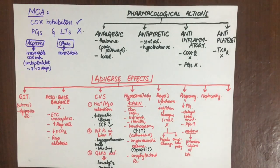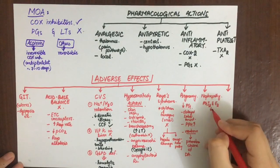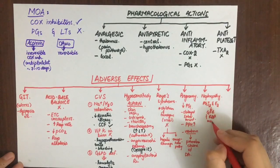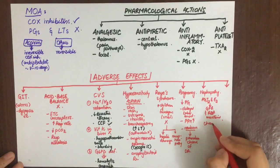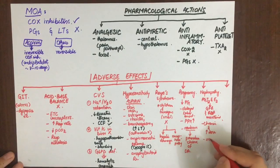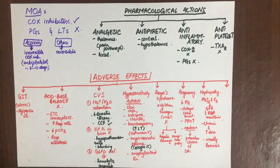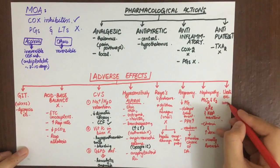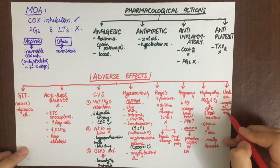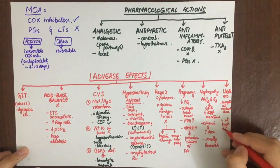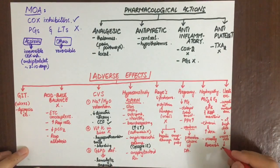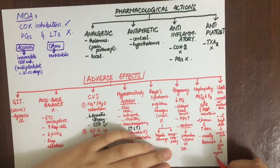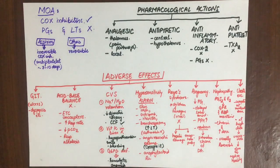NSAID-induced nephropathy results from chronic use and is usually reversible. It occurs due to decreased formation of PGI2 and PGE2, which normally maintain GFR and renal blood flow via vasodilation. Sulindac can be used as an alternative as it has no renal effects, though it is associated with hypersensitivity reactions. NSAIDs also interfere with urate excretion — since both are weak acids competing for renal excretion — causing hyperuricemia, though at higher nephrotoxic doses, uric acid excretion into urine may actually increase.